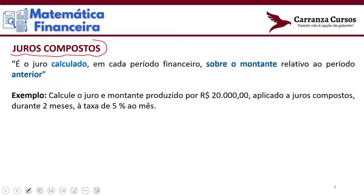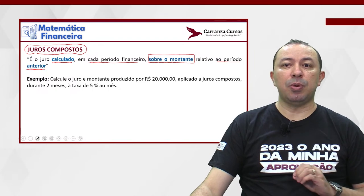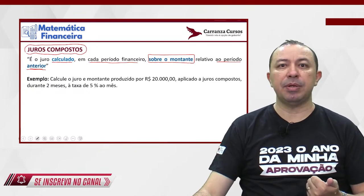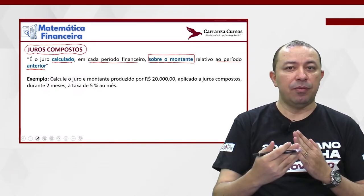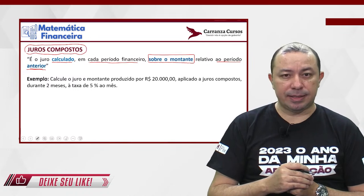Vamos entender o conceito. Juros compostos: como são calculados? A definição é a forma como ele é calculado. Juros compostos é aquele que é calculado em cada período financeiro sobre o montante relativo ao período anterior. Essa é a definição de juros compostos, que leva àquele velho jargão: é aquele que rende juros sobre juros. Exatamente, porque o montante é a atualização do capital no tempo. Então, se você aplica a taxa no montante, você está aplicando essa taxa no montante inicial mais os juros corrigidos até aquela data.